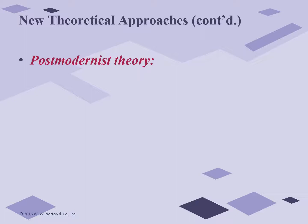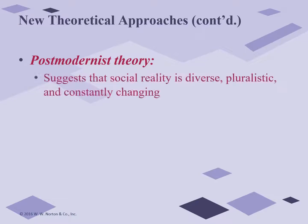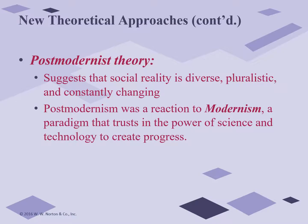Postmodernist theory is the last of some of the new theoretical approaches. It suggests that social reality is diverse, pluralistic, and constantly changing. To understand postmodernism, we need to juxtapose it with modernism, the movement against which it was a reaction. Modernism is both a historical period and an ideological stance that began with the 18th century Enlightenment, or the Age of Reason — it values scientific knowledge, a linear view of history, and a belief in the universality of human nature. In postmodernism, on the other hand, there are no absolutes, no claims to truth, reason, right, order, or stability; everything is therefore relative, fragmented, temporary, and contingent.